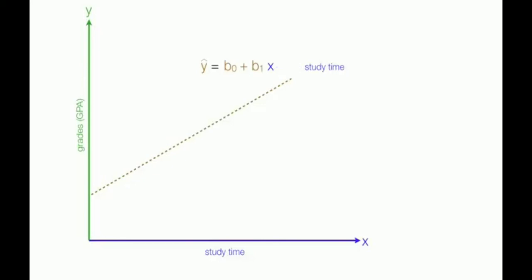B-naught we derive mathematically. And it is the y-intercept. B-1 we also derive mathematically, and I'll do it in a later video. And it's the slope of the line. In this case, the slope is positive. In the next video, I'll discuss how you develop these equations.